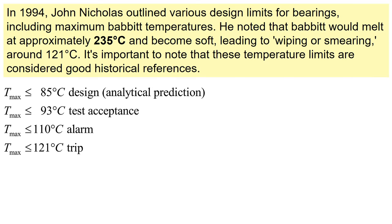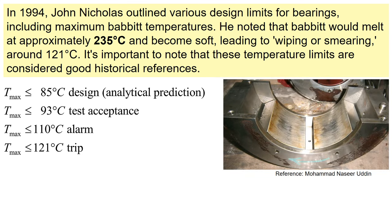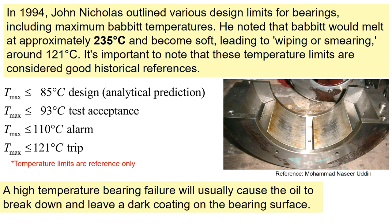In 1994, John Nicholas outlined various design limits for bearings, including maximum Babbitt temperatures. He noted that Babbitt would melt at approximately 235 degrees Celsius and become soft, leading to whipping or smearing around 121 degrees Celsius. A high temperature bearing failure will usually cause the oil to break down and leave a dark coating on the bearing surface.